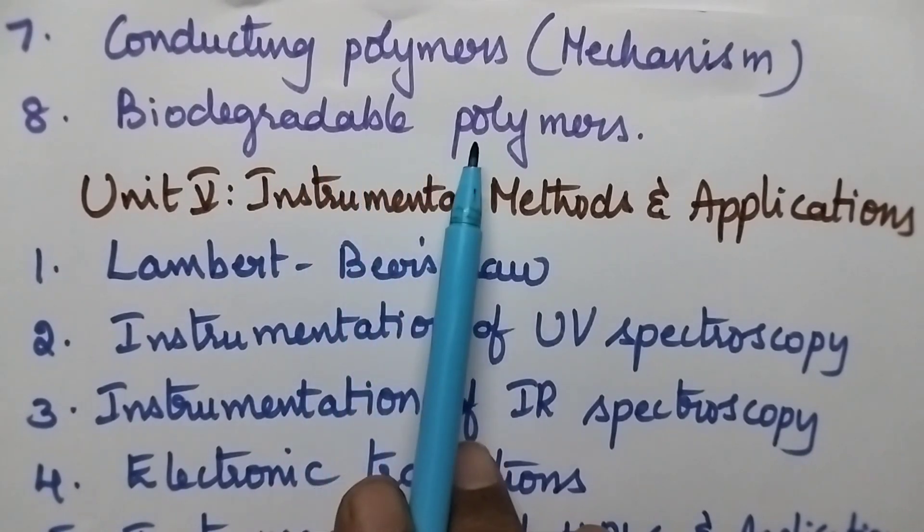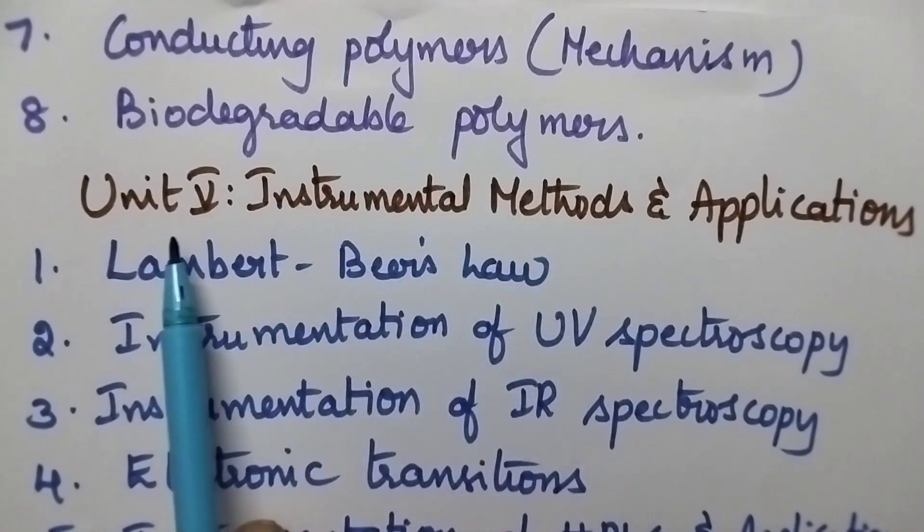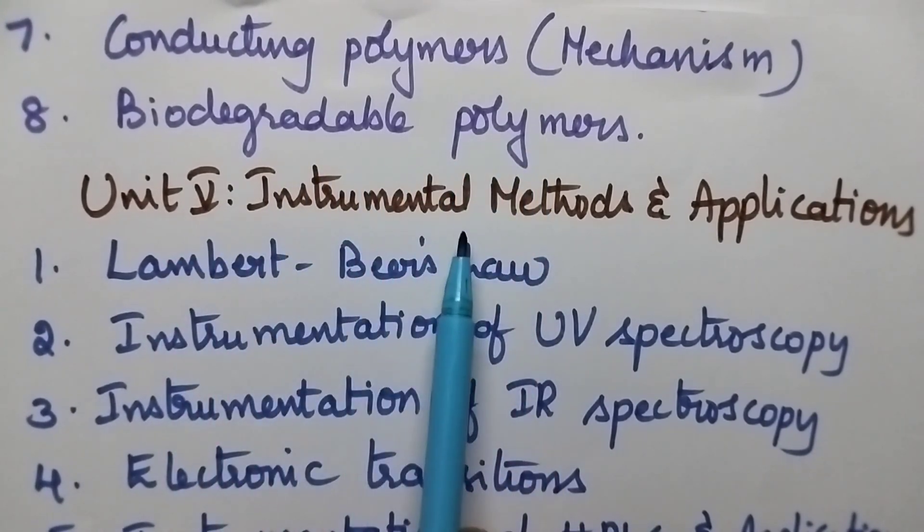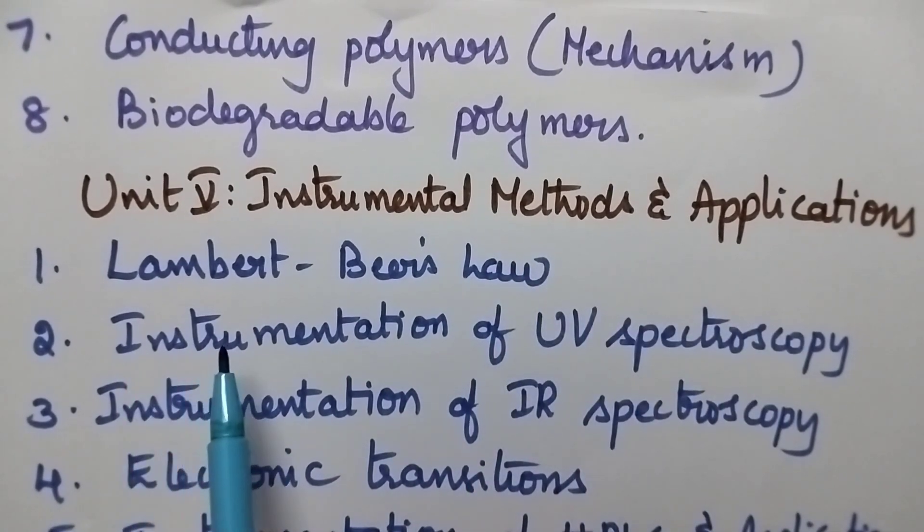Coming to the fifth unit, it is called as instrumental methods and applications. First question is Beer-Lambert's law. Second one is instrumentation of UV spectroscopy. Third one is instrumentation of IR spectroscopy.